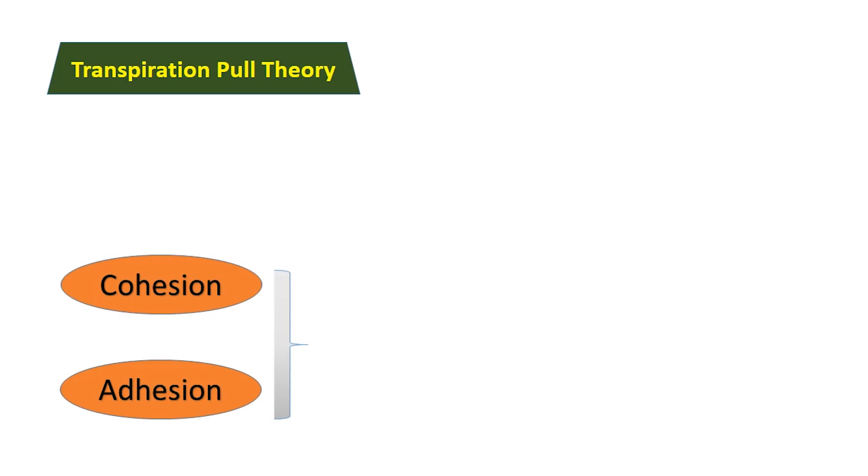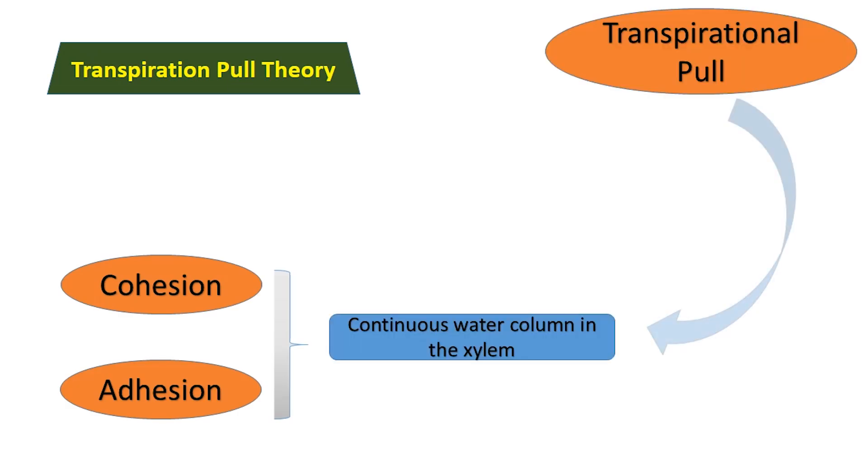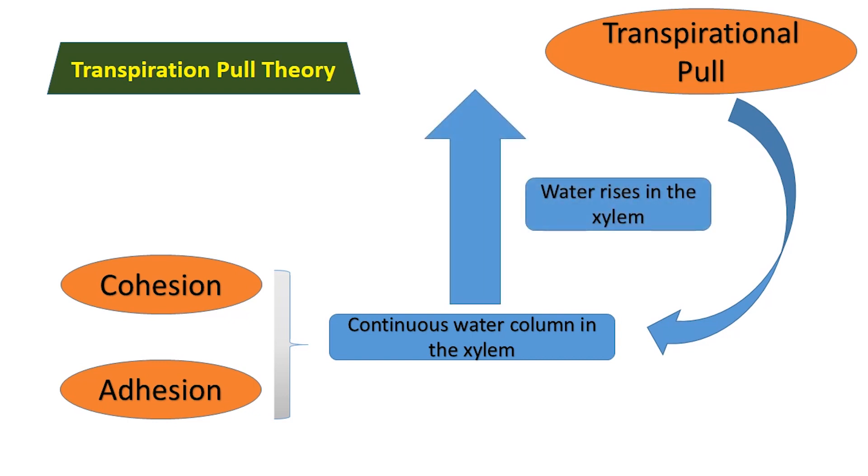The theory is based on two important features. The molecules of water have cohesive and adhesive properties allowing it to form a water column within the narrow capillaries of xylem. Two, transpiration pull exerted on this water column pulls it upwards.